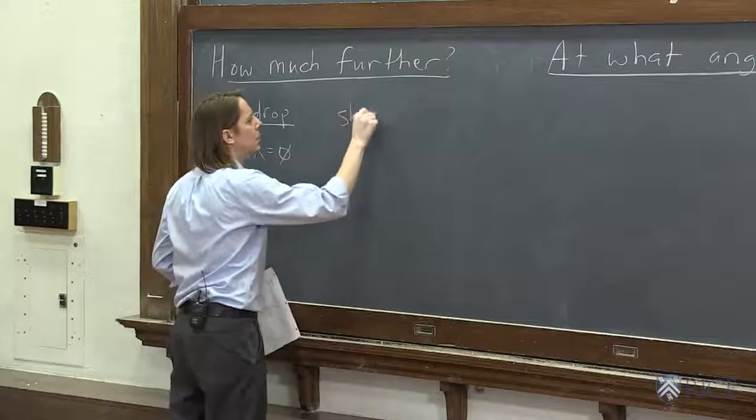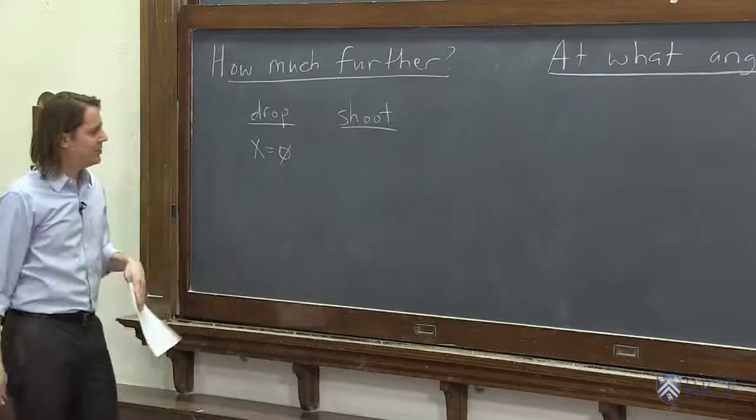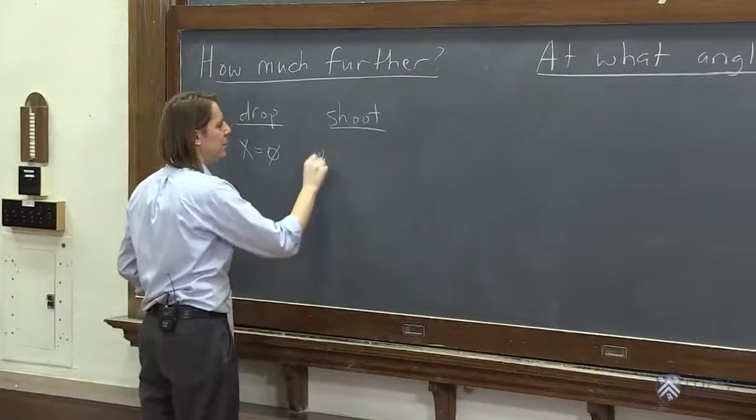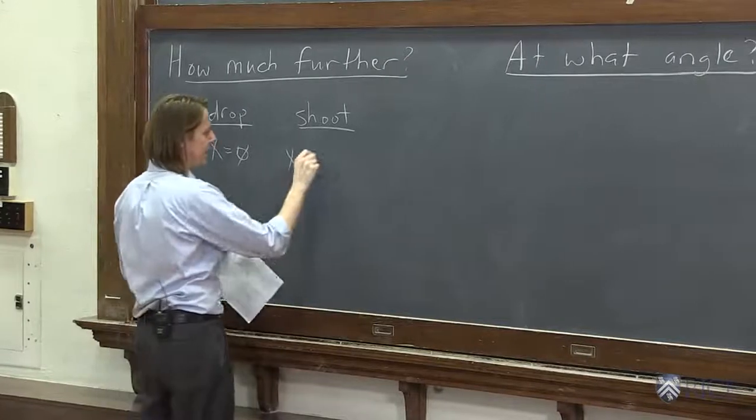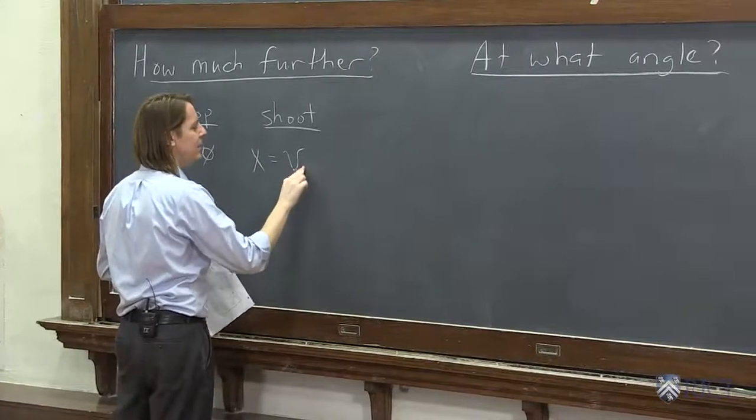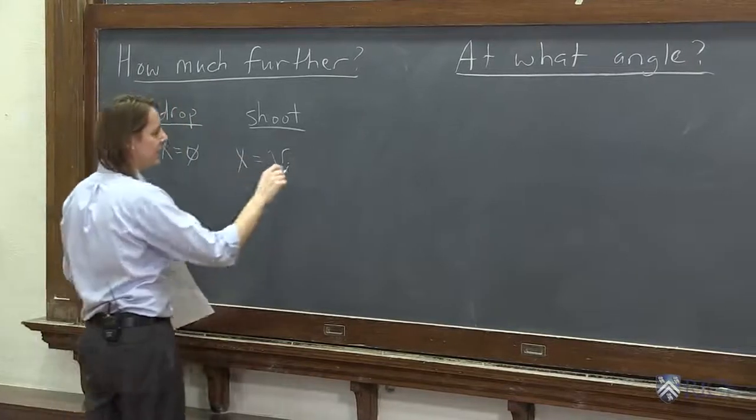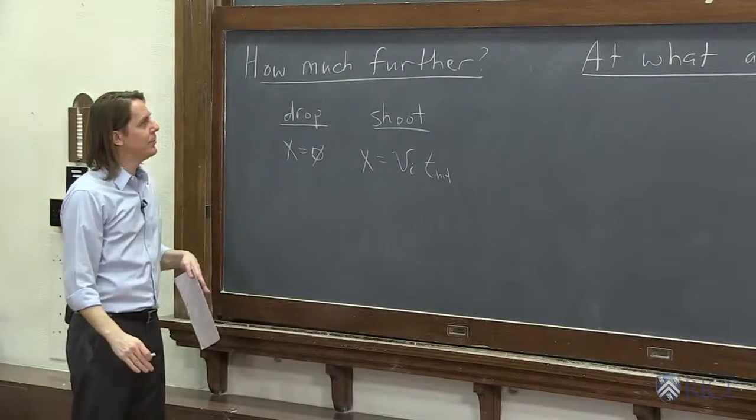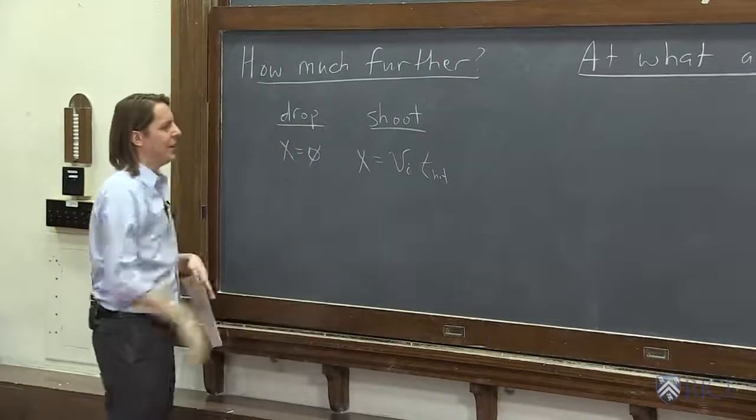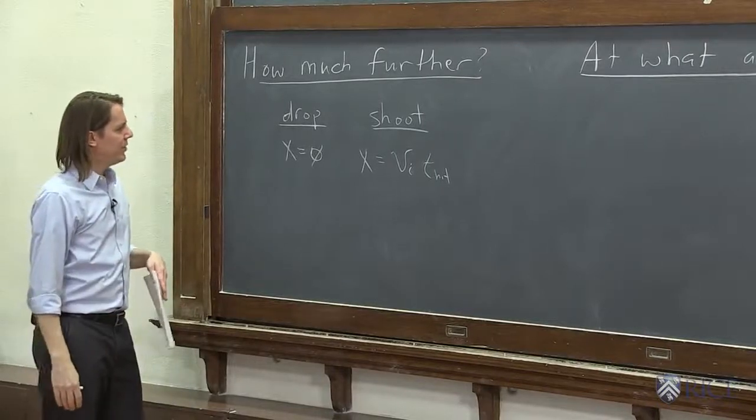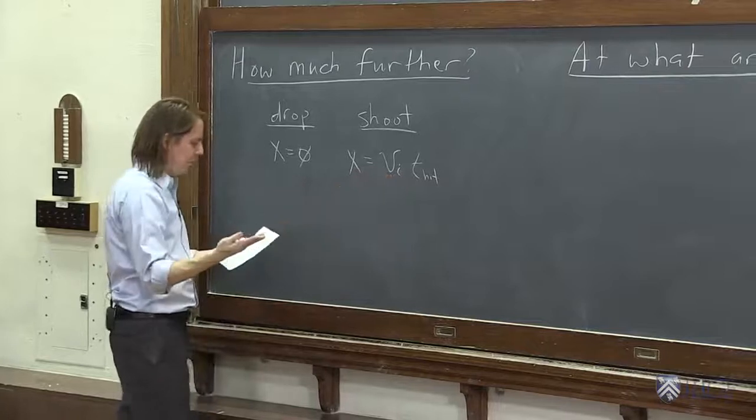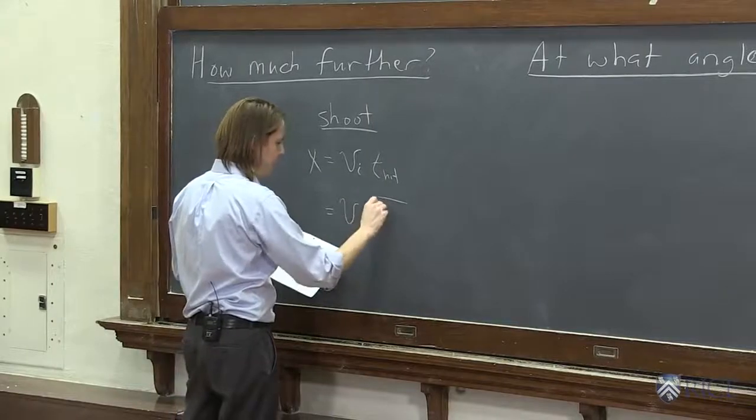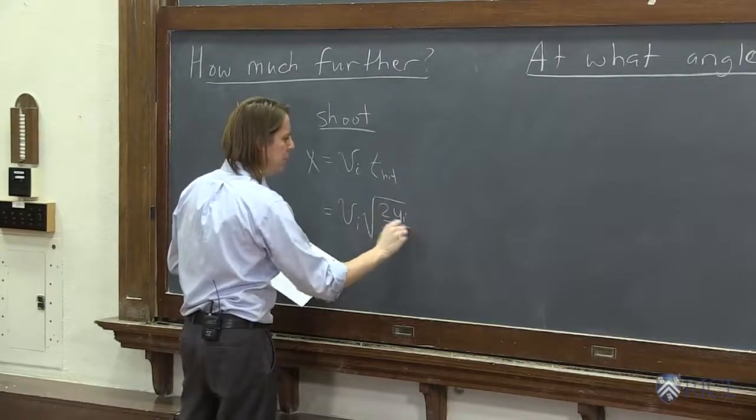And shoot, if we think back to the x component of that position vector, basically it had 0 initial position, and it just moved with constant velocity. So it would be at v initial, the initial horizontal velocity, times t hit. Because this is how far it got before it hit the table. So we could then say the difference of those two is just this value because that one is 0. And you could plug in things that you know, v initial times the square root of 2y initial over g.